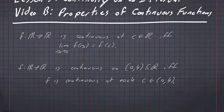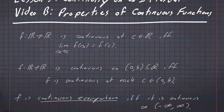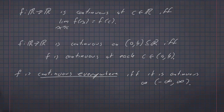Continuity on an open interval is pretty easy to work with. Very often we're going to be looking at functions that are continuous everywhere, and when we say everywhere we mean all real numbers — the interval from negative infinity to infinity. Some sources call this continuous everywhere, some sources call this everywhere continuous. Those two things mean the same thing, and if we just say that f is continuous, this is what we are talking about.